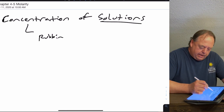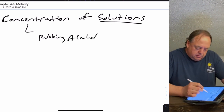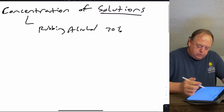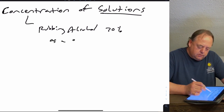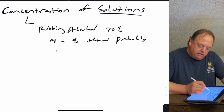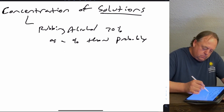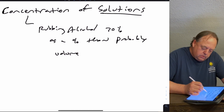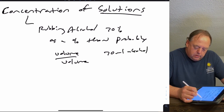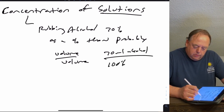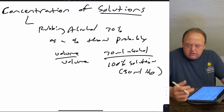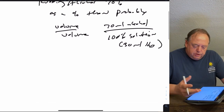One example you might be familiar with: if you bought rubbing alcohol in the store, you can buy 70% rubbing alcohol. When reported as a percentage like that, it's probably a volume-to-volume ratio, meaning 70 mL of the alcohol per 100 mL of solution — so 30 mL of water and 70 mL of alcohol.